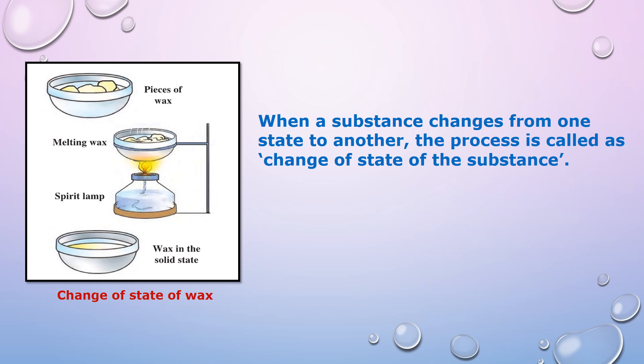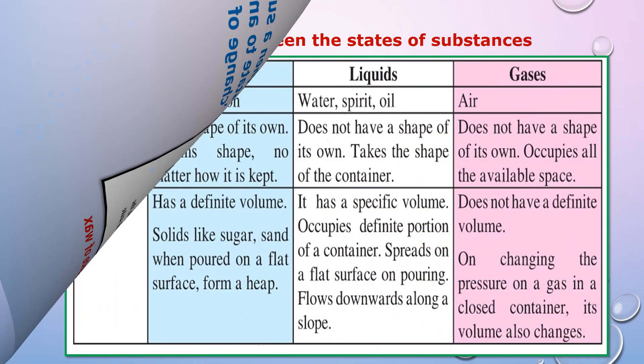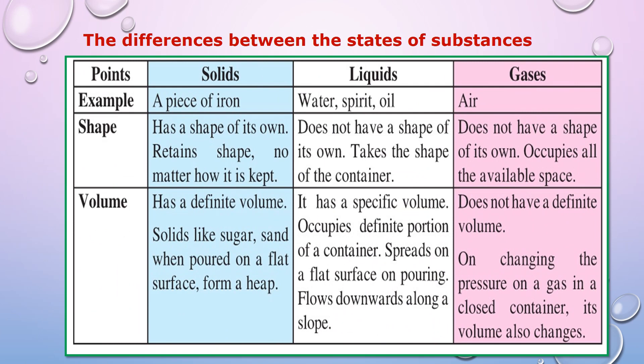In the previous period, we have seen change of state of substances — meaning a substance changes from one state to another state. We saw the differences between the states of substances, i.e. solid, liquid, and gas, and their properties and examples.